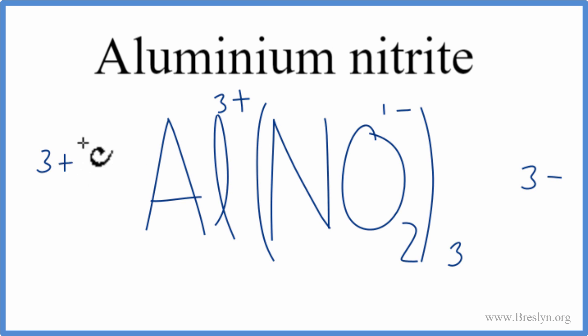we have 1, which is 3+. So 3+ and 3-, that gives us 0, gives us a net charge of 0, and we're done.